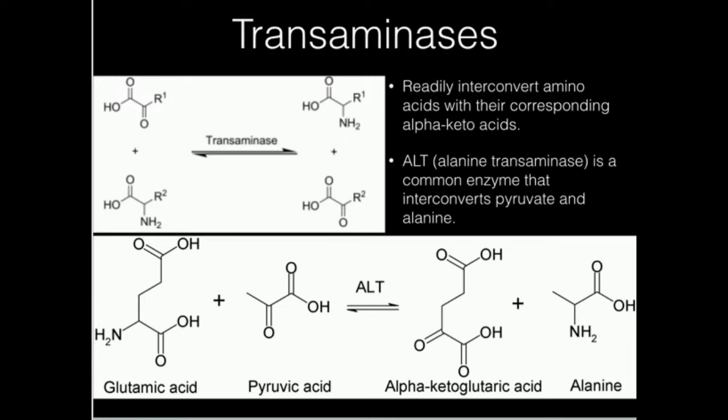In other words, if I have tons of pyruvate, the reaction will shift to the right to produce alanine. If I have too much alanine, I'll shift it to the left and produce pyruvate. It's very dependent on Le Chatelier's principle because the equilibrium constant is very close to one.